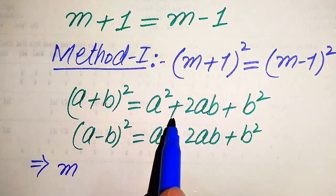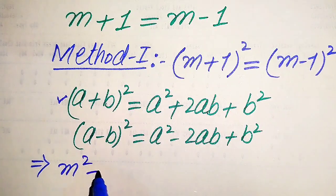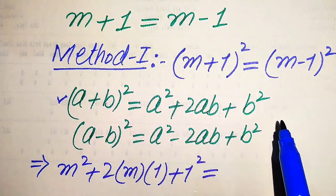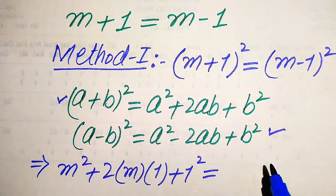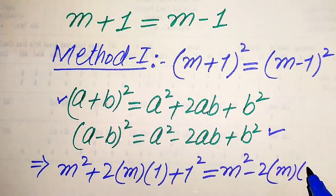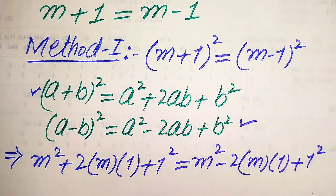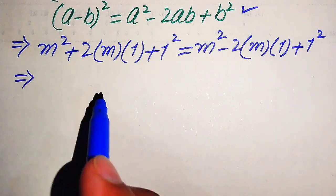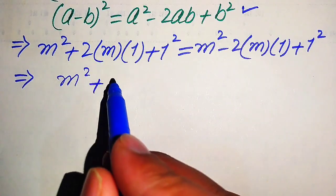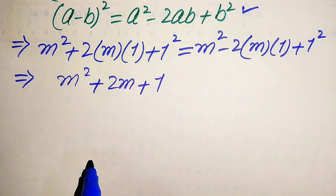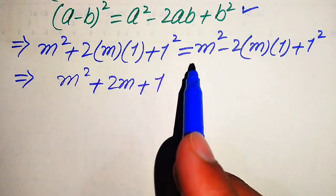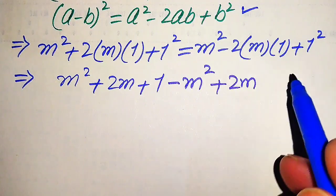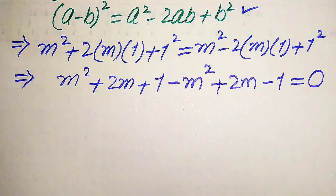Applying the first formula to the left-hand side, it becomes m² + 2·m·1 + 1² = m² + 2m + 1. Applying the second formula to the right-hand side, it becomes m² − 2·m·1 + 1² = m² − 2m + 1. We then move terms from the right-hand side to the left-hand side: m² becomes −m², −2m becomes +2m, and +1 becomes −1, giving the whole equation equals zero.